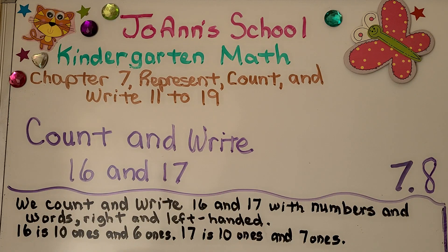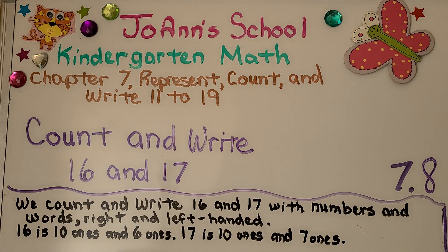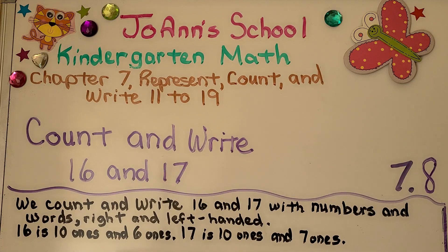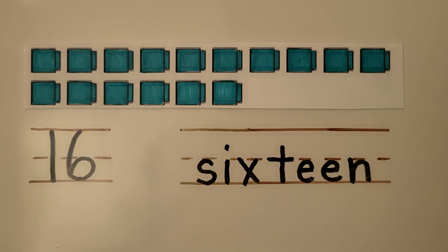Lesson 7.8, count and write 16 and 17. We're going to count and write 16 and 17 with numbers and words, right and left handed, and go over that 16 is 10 ones and 6 ones, and 17 is 10 ones and 7 ones.